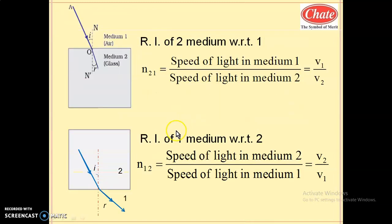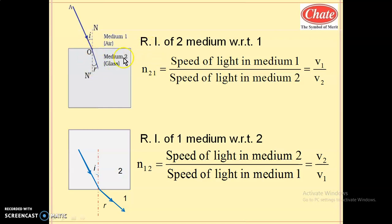How is this symbolically written? In the first case, when light travels from air to glass — rarer to denser medium — it bends toward the normal, so angle R is less than angle I. This is the incident ray and this is the refracted ray. Refraction occurs due to the arrival into medium 2, so this is called the refractive index of medium 2 with respect to medium 1.